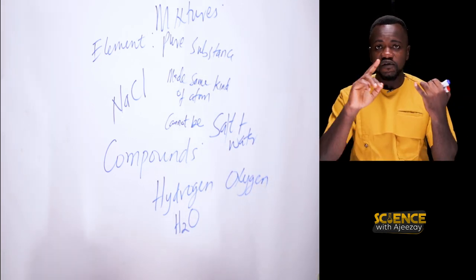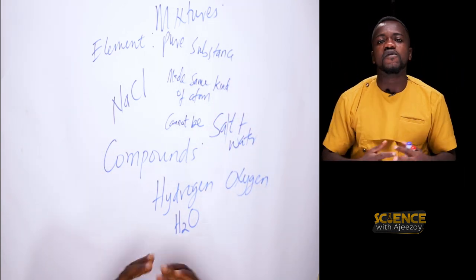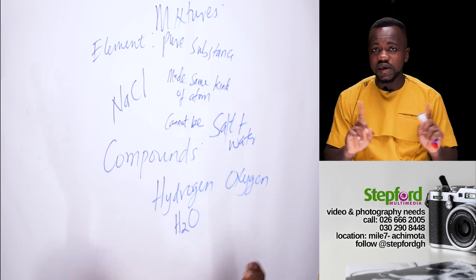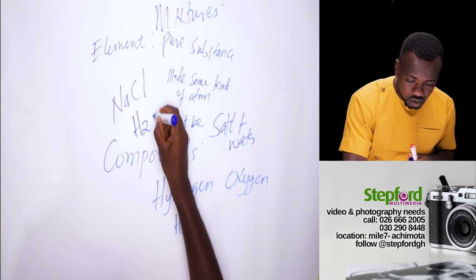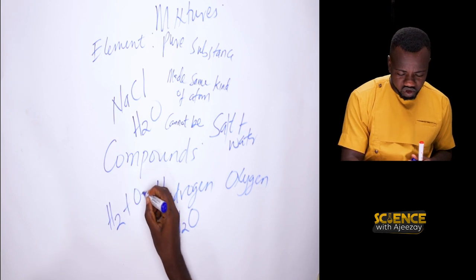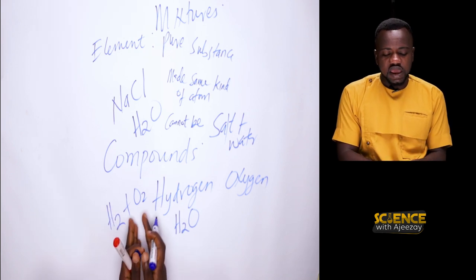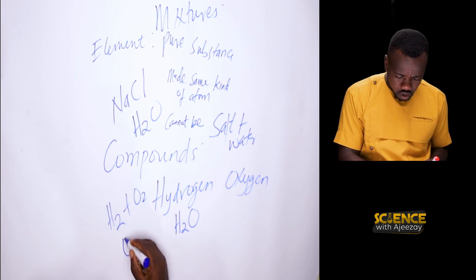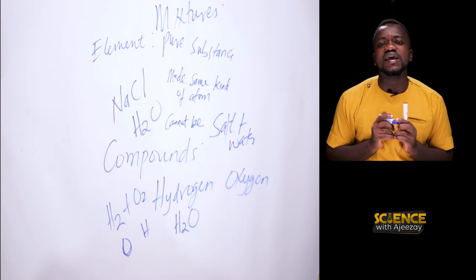You have learned that an element is a pure substance made up of same kind of atoms and cannot be broken down into any simple form by any known chemical process. Take water — you can break water down into hydrogen and oxygen molecules. You can also break these further down to the elemental stage of oxygen and hydrogen. But from there you can't break them down further. And that is an element.